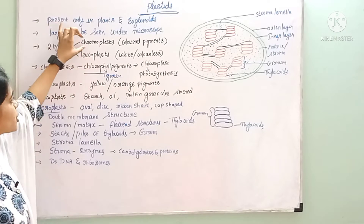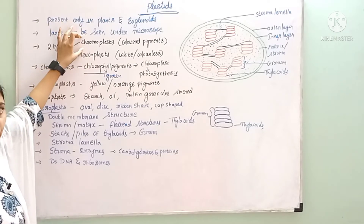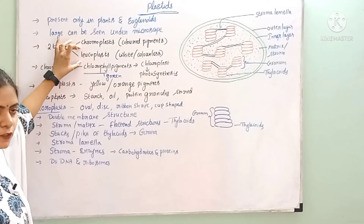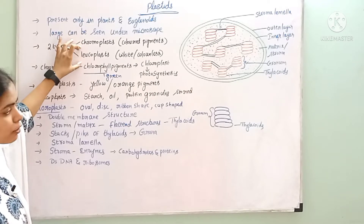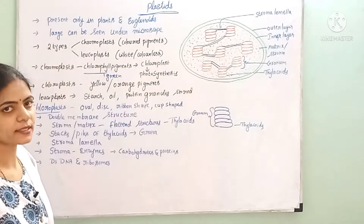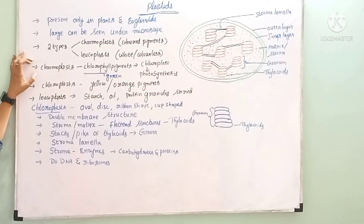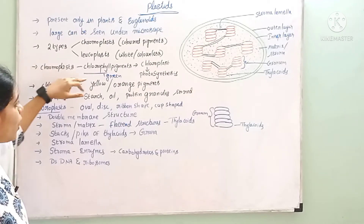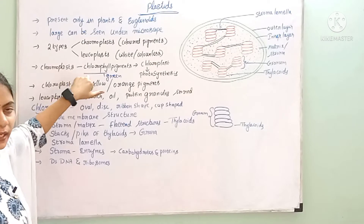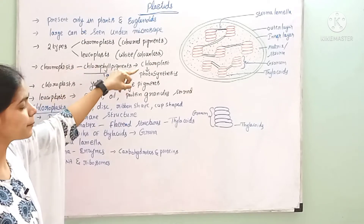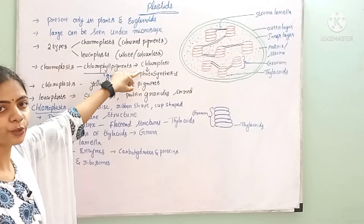The plastics which contain the colored pigment are called chromoplasts, and the plastics which are colorless are called leucoplasts. And these chromoplasts are green colored pigments. So what is chlorophyll and pigment?